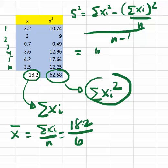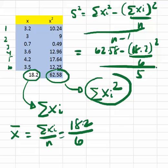So this will be 62.58 minus 18.2 squared, divided by 6, and divided by 5. And that's what we use that for, the sum of xi and the sum of xi squared.